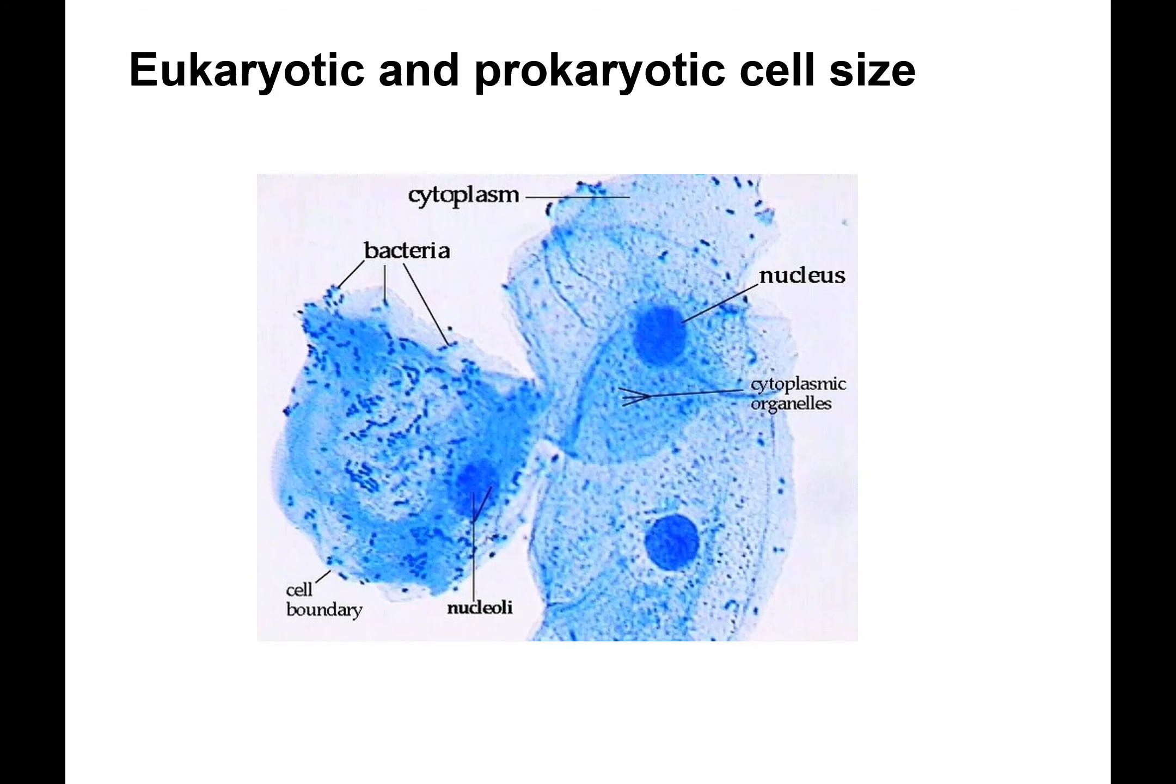Remember that prokaryotic cells are really small compared to eukaryotic cells. Prokaryotic cells on average are 1 to 10 micrometers. Eukaryotic cells are generally, and there's always exceptions, 10 to 100 micrometers. So it can be much larger than a prokaryotic cell. So how does that work? Eukaryotic cells are so much larger. They have so much more volume than this little prokaryote. How can eukaryotes survive?